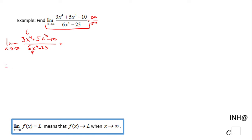We're going to have here limit when x approaches infinity. I'm going to factor x to the 4th power and then I have here 3 plus 5x cubed over x to the 4th power minus 10 over x to the 4th power.